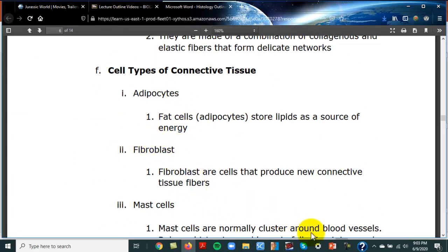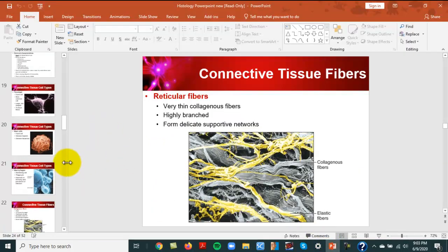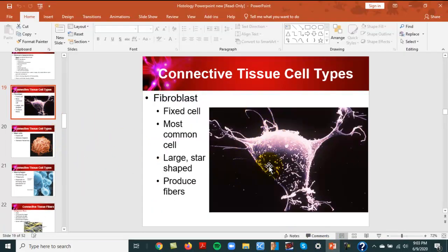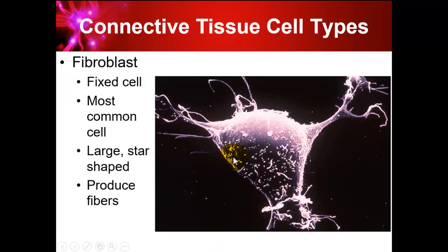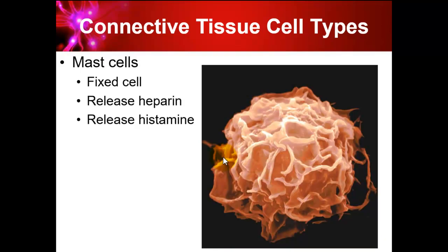The cell types in connective tissue include adipocytes (fat cells found in adipose tissue) and fibroblasts, which make connective tissue fibers and lay down new fibers — they're responsible for forming scar tissue that fills in areas of damage or injury. Mast cells cause inflammation; they release heparin, an anticoagulant that increases blood flow to an area.